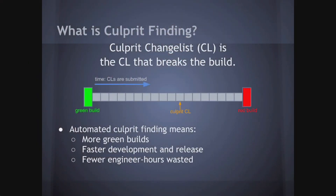A culprit change list is defined as a CL that breaks the build. As you saw during the talks yesterday and today, most companies today, including Google, use continuous integration. In a typical setup, you have a green build where the build compiles, all the tests pass, and everything is good. Then developers commit change lists — those gray boxes represent change lists — and at some point the continuous integration machines download the code, build it, and some tests fail, giving us a red build. We need to quickly figure out which of those gray boxes is the culprit.